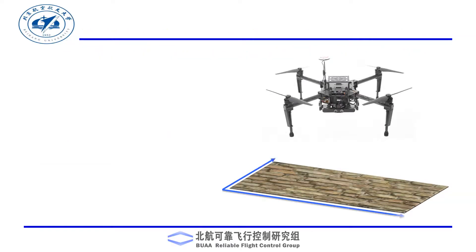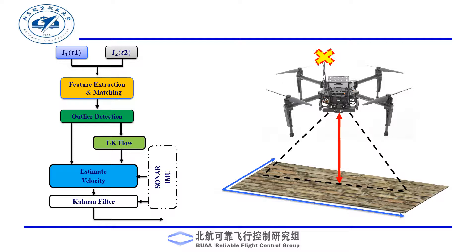A method is described to estimate drone velocity using IMU, sonar, and a downward-looking camera for GPS-denied environments. After receiving two consecutive images from a downward-looking camera, ego motion is estimated using feature extraction and matching or by using Lucas-Kanade optical flow. The amount of motion is used to estimate drone velocity in the world frame.